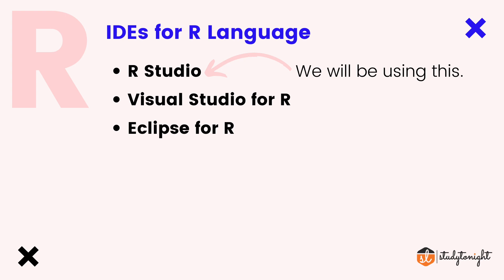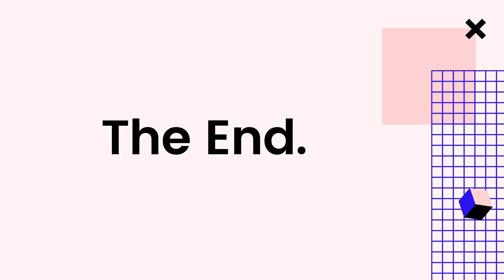Last but not least is Eclipse — if you've been in touch with programming, you likely know Eclipse, and yes, you can also do R programming with it. These are the three major IDEs for R; apart from these, there are others like IBM workbenches and many more. For practice problems, demonstrations, and examples in this course, I am going to use R Studio. In the next video, I will help you install both R and R Studio on your system.